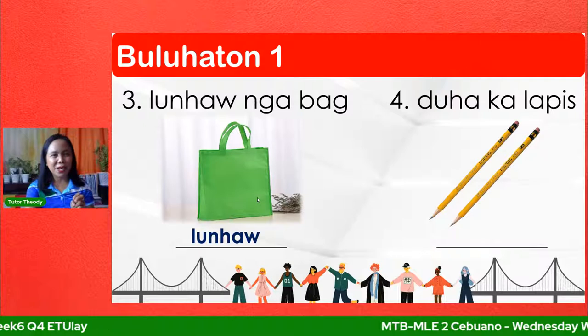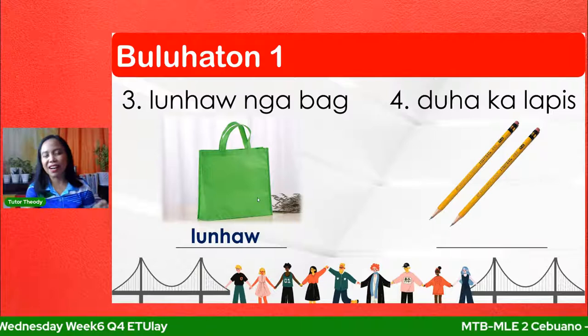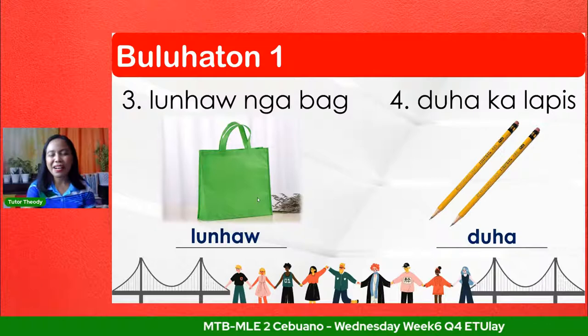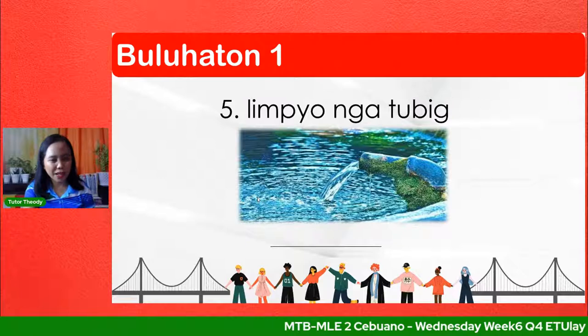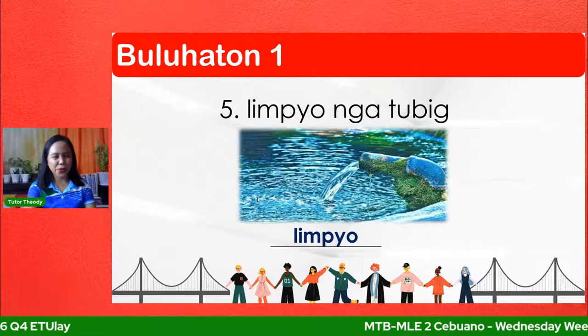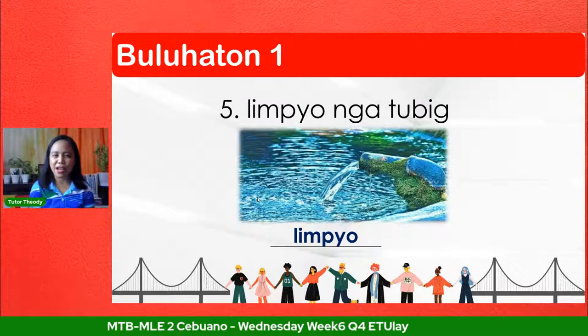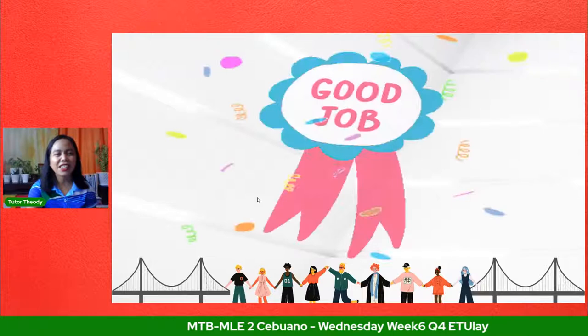Number four: duha kalapis — asa niin niya ang punghulagway? Ang punghulagway kay duha. Sa mga nakakuha, congratulations! Ikalima: limpyo nga tubig — ang punghulagway na iniikkalima kay limpyo. Limpyo nga tubig para ay gamit na to limpyo sad. Sa mga nakakuha sagikan sa number one hanggang sa number five, congratulations! Good job.